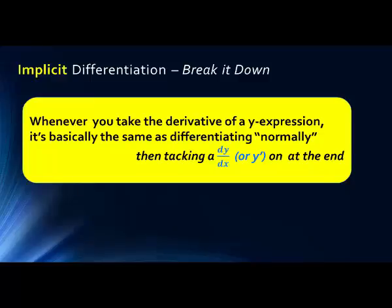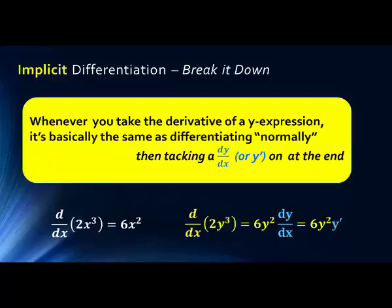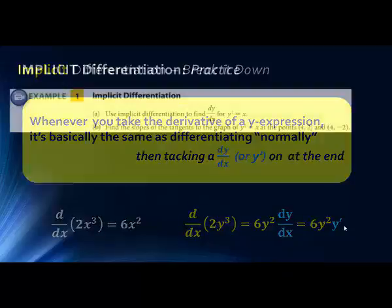That may seem a little complicated, but it's actually a really simple process. Whenever you take the derivative of a y expression, it's basically the same as differentiating normally, then tacking on a dy/dx or y prime — I suggest you use y prime. For example, the derivative with respect to x of 2x cubed simply equals 6x squared. If we do the same thing for a y function, we first take the derivative with respect to y — which is the same thing, 6y squared — times dy/dx, or 6y squared y prime. We take the derivative with respect to y and then simply add on y prime. When we have an equation with multiple of these, we solve algebraically for y prime.